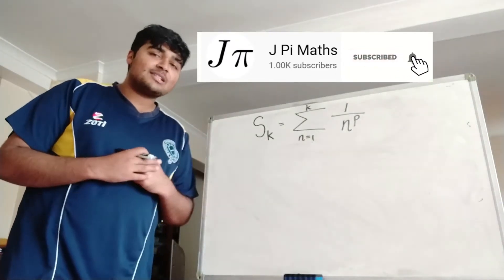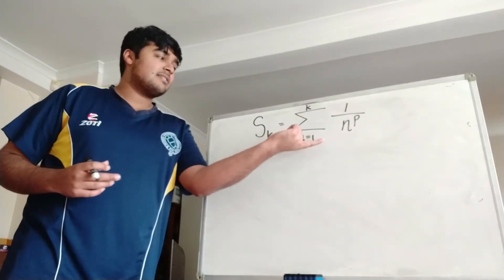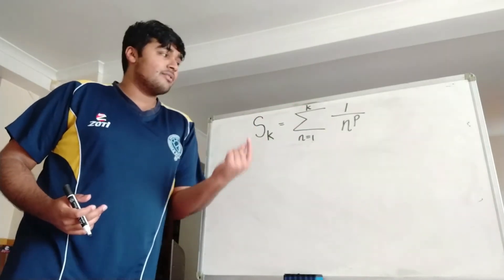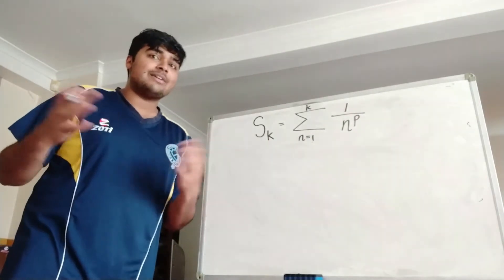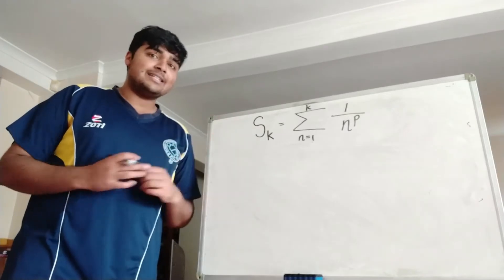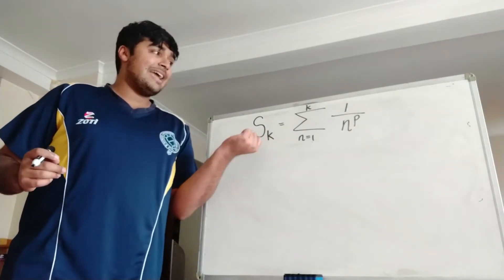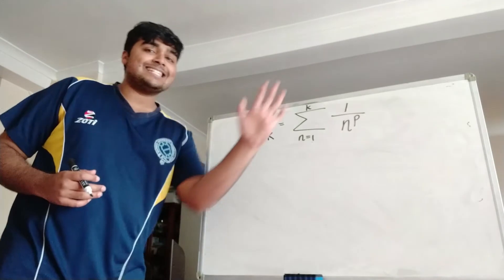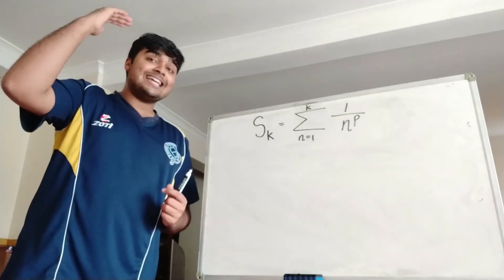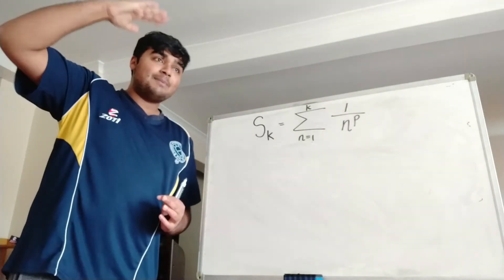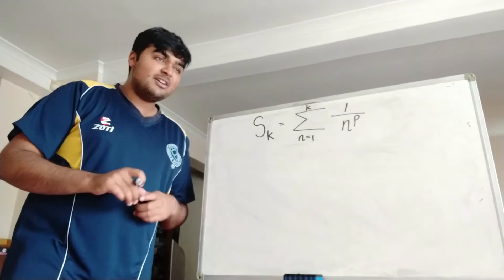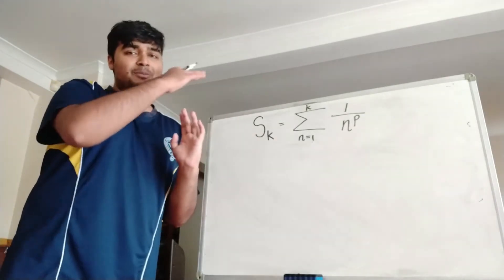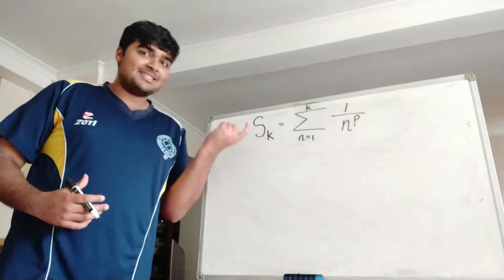The first thing we're going to do is introduce a partial sum notation to our infinite series. So Sk is the sum from n equals 1 to k of 1 over n to the p. We want to show that this right-hand side converges as k goes to infinity, which is equivalent to showing the sequence of Sk converges. We notice that Sk is an increasing sequence because Sk+1 is nothing but Sk plus 1 over (k+1) to the p, which is a positive number. So if we can show that Sk is bounded from above, then because it's an increasing sequence, that tells us it converges and that will solve our problem.